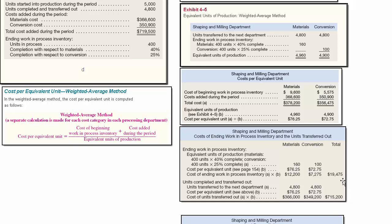The next schedule shows us the cost of ending work in process and the units transferred out. We use material and conversion columns plus a total column. For ending work in process, we take the 160 equivalent units for materials and 100 for conversion, multiply each by the cost per equivalent unit we just calculated, and get the value of ending work in process. The cost of units transferred is the 4,800 units multiplied by $76.25 and $72.75, giving us the total dollar amount transferred out.